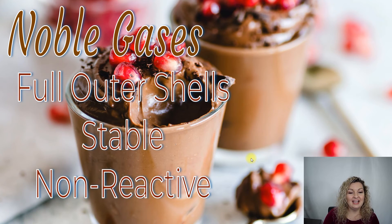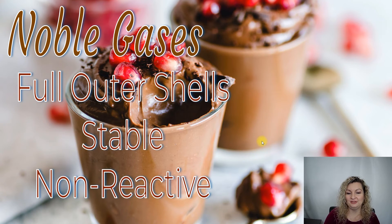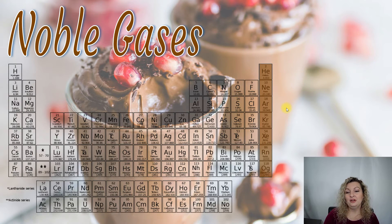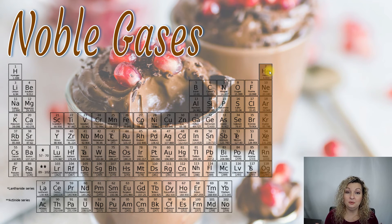Next up are our noble gases. Noble gases have full outer shells, so they're very stable and happy — in other words, non-reactive. They're not going to explode or catch on fire like the other families. Since they're all gases, they're very light and airy, so I think of a chocolate mousse dessert for noble gases. They are located in the very last column on the periodic table. They all have a full outer shell of eight, except for helium. Helium only has one energy level, and the first shell can only hold two electrons — but since that's the maximum it can hold, helium still has a full outer shell and is just as stable as the rest of the noble gases.